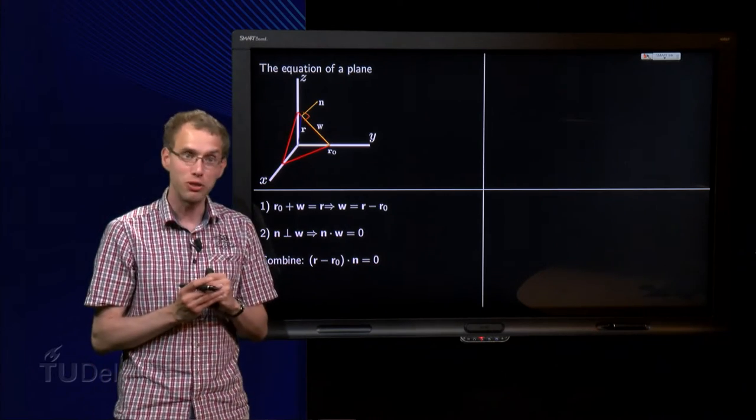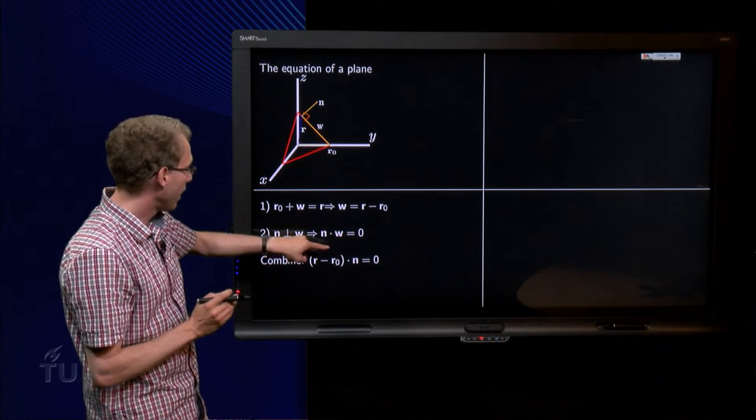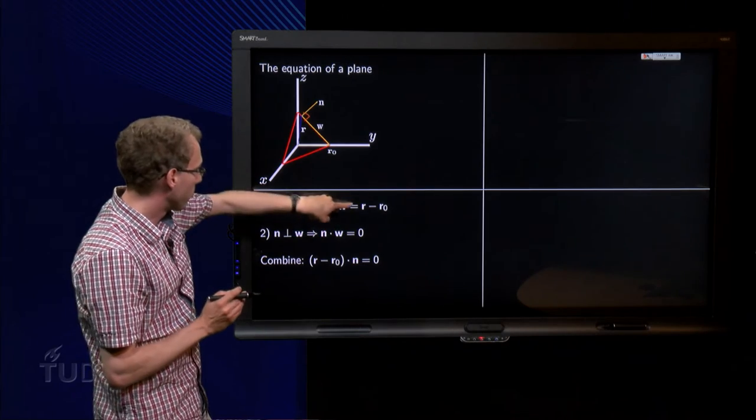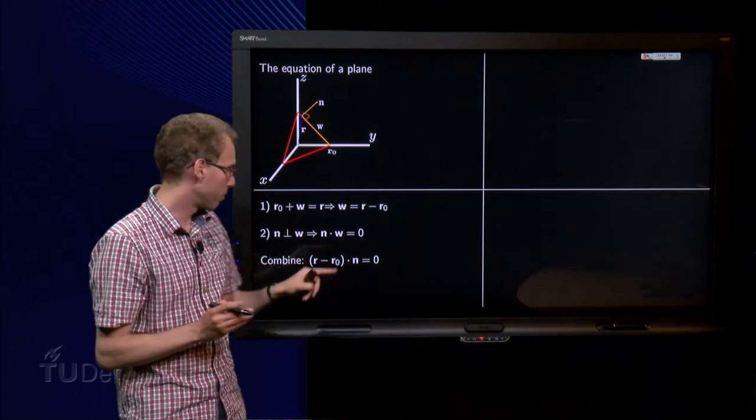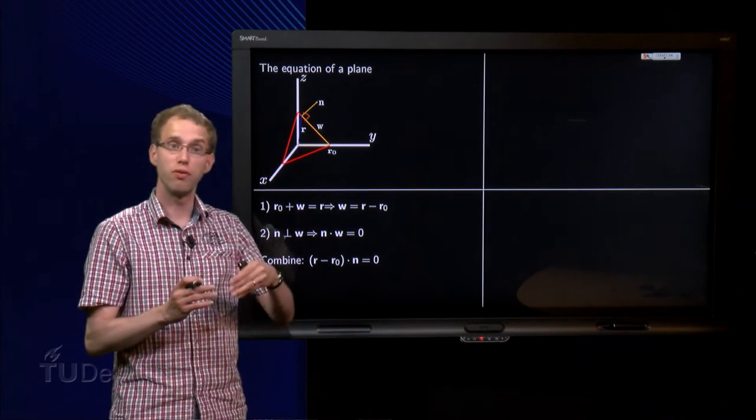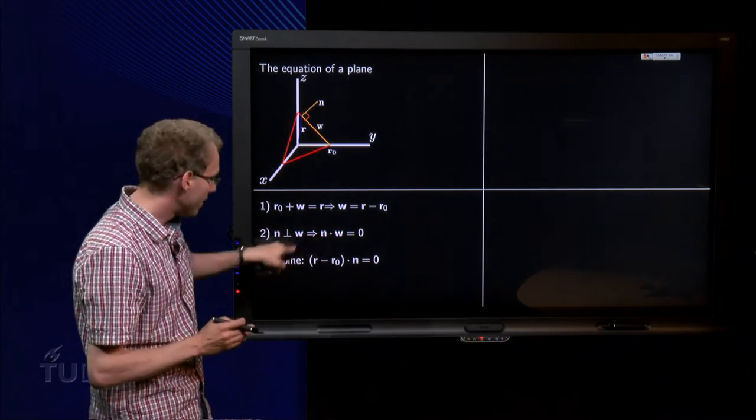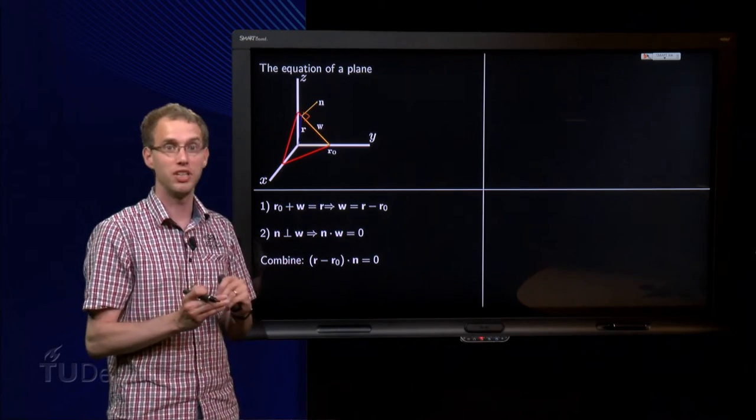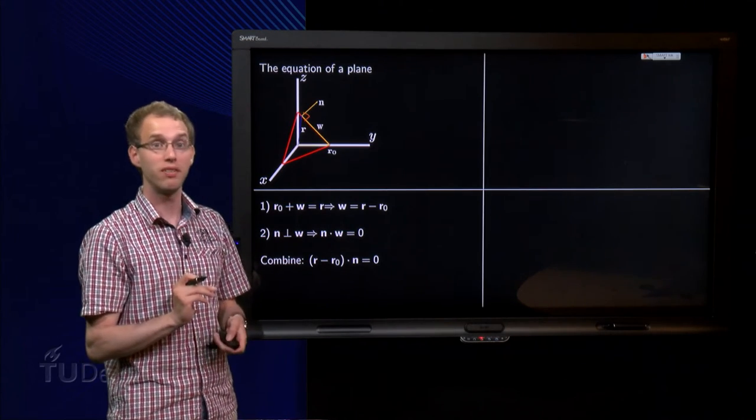So if we combine those two, we see that the inner product of w and n, so with r minus r0, the inner product with n, has to be equal to 0 for all vectors r, so for all points in the plane. This inner product over here has to be 0, and that will determine the equation of our plane.